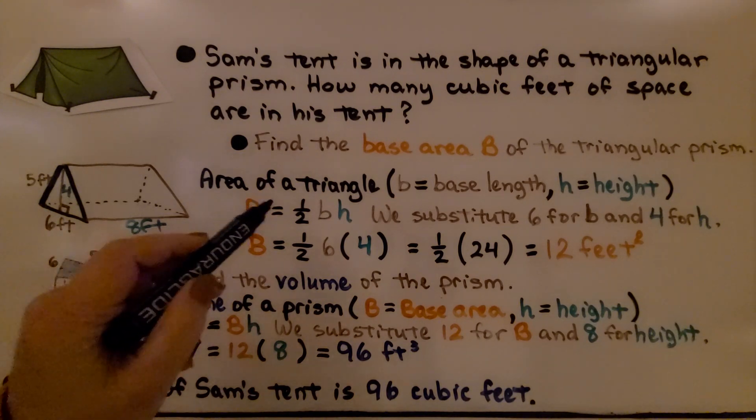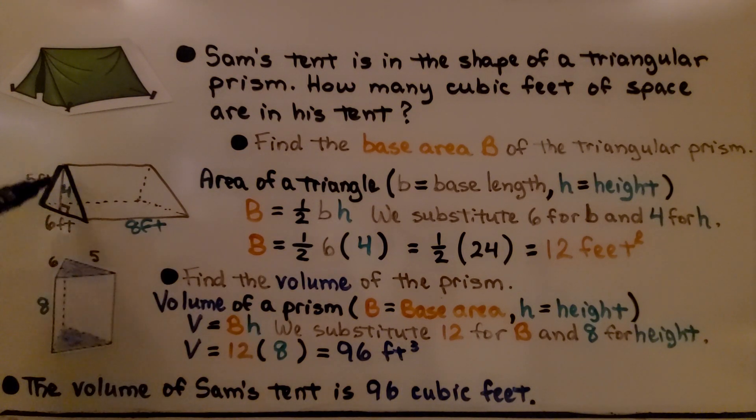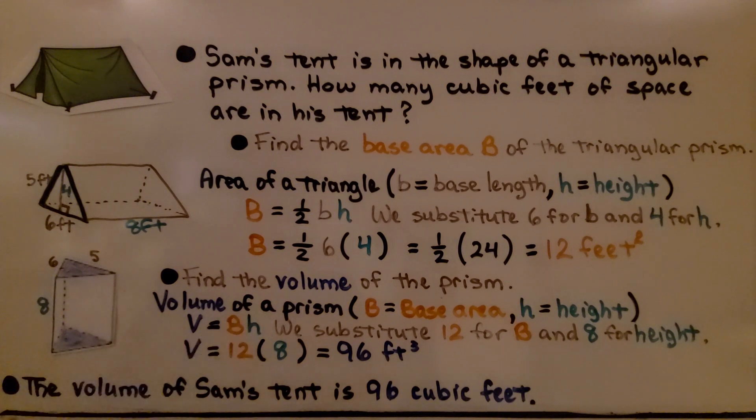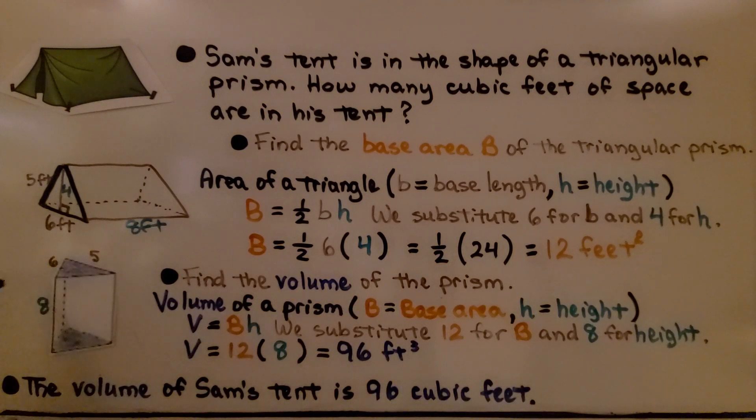We're going to use half times the base times the height: ½(6)(4) = 12 feet squared. Now we need to find the volume of the prism. The volume of a prism is the base area times the height. We substitute 12 for B and 8 for h. Because now it's standing up, 8 is its height. V = 12(8) = 96 feet cubed. The volume of Sam's tent is 96 cubic feet.